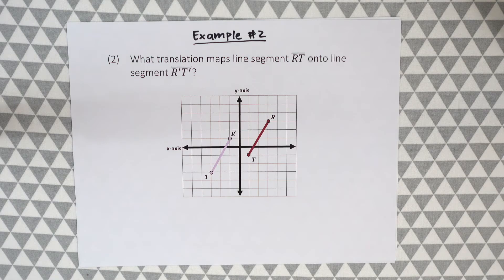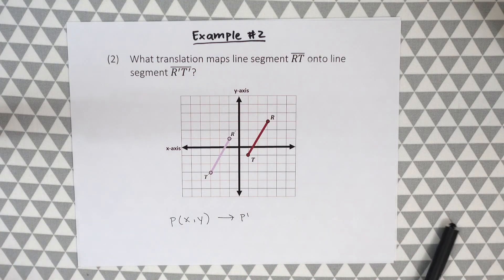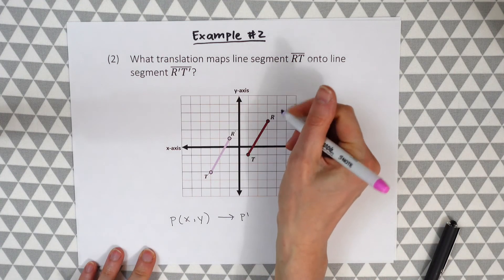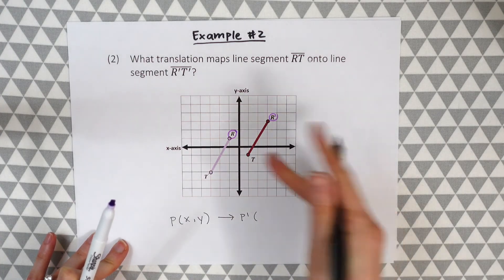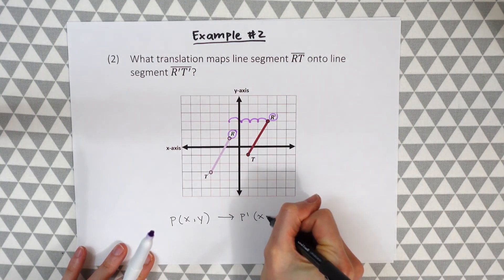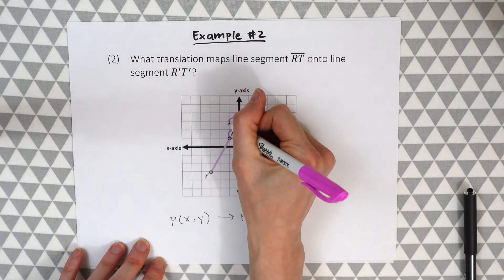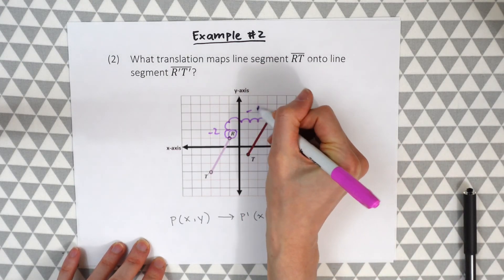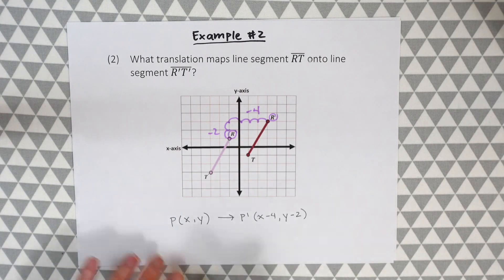Example two: what translation maps line segment RT onto line segment R'T'? We write P(x, y) → P' and look at corresponding points R and R'. This time we're going to the left — four units — so we subtract: x - 4. Then we're going down two units, so we subtract two from y: y - 2. The rule is P(x, y) → (x - 4, y - 2), subtracting four from each x-coordinate and two from each y-coordinate.